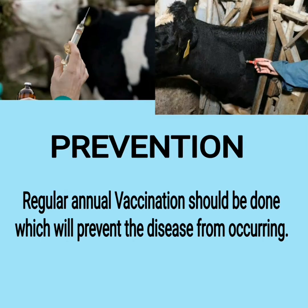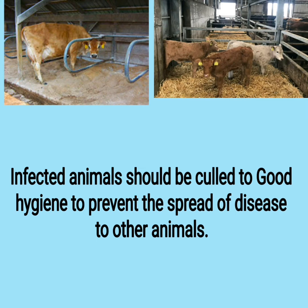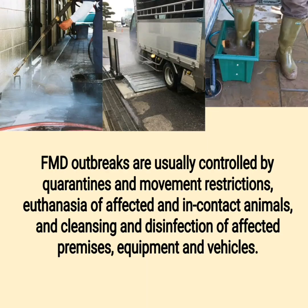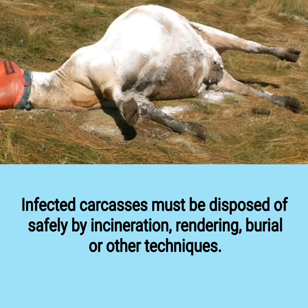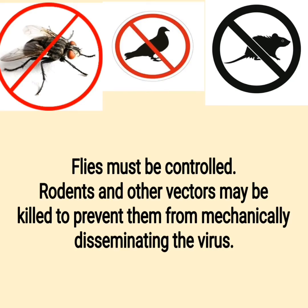Prevention: regular annual vaccination should be done which will prevent the disease from occurring. Infected animals should be culled and good hygiene maintained to prevent the spread of disease to other animals. FMD outbreaks are usually controlled by quarantines and movement restrictions, euthanasia of affected and in-contact animals, and cleansing and disinfection of affected premises, equipment and vehicles. Infected carcasses must be disposed of safely by incineration, rendering, burial or other techniques. Flies must be controlled. Rodents and other vectors may be killed to prevent them from mechanically disseminating the virus.